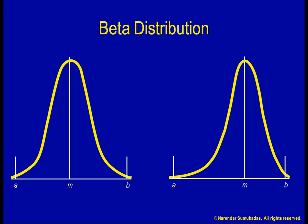The two ends of the distribution are the optimistic estimate, A, and the pessimistic estimate, B. The mode, M, is the most likely estimate. For scheduling my project, the appropriate time estimate to use is the mean of the beta distribution, which is called the expected time, T subscript E.